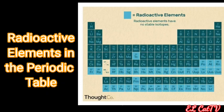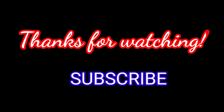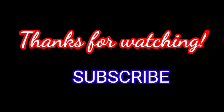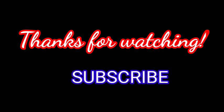So that ends our discussion on radioactive decay with the examples of radioactive elements. Let's get to the summary. Earth's internal heat comes from two sources. Primordial heat is the heat that was already inside the Earth during its formation. Radiogenic heat is the heat produced by radioactive elements in the Earth's crust. Can you now describe the sources of Earth's internal heat? I bet you can. Thanks for watching and subscribe for more videos. We'll see you next time.